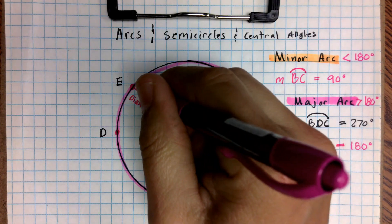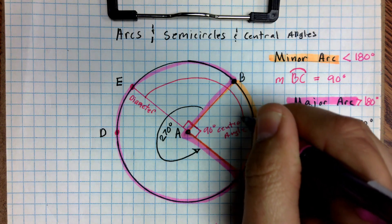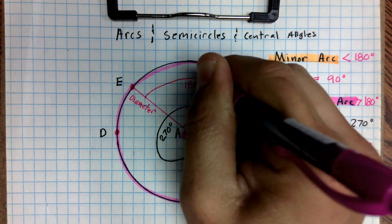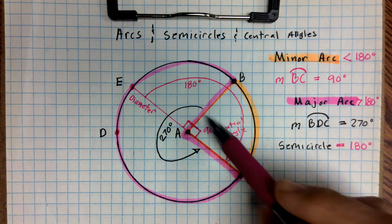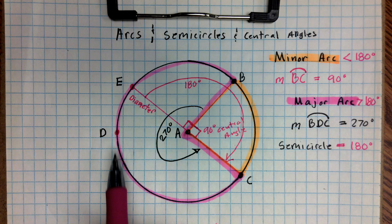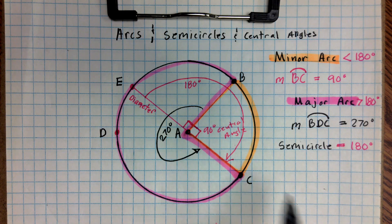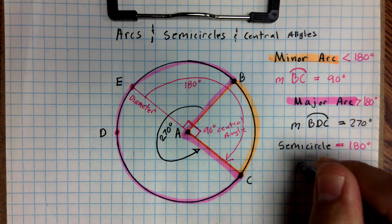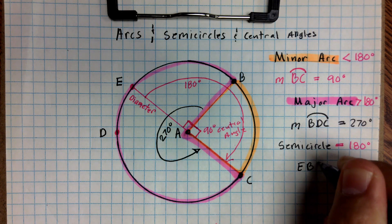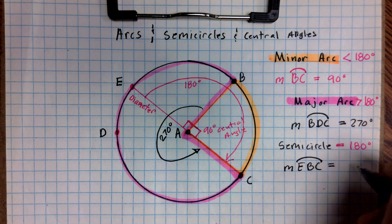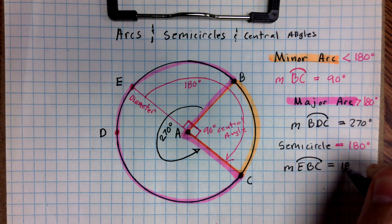So because that's a diameter, this whole angle, if I were to take this angle and just come around, that angle would equal 180 degrees exactly. In other words, it's half of a circle. So we would call that a semicircle. And we could write that as EBC, and its measure is equal to 180 degrees exactly.